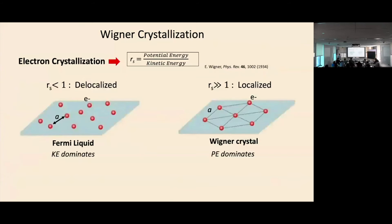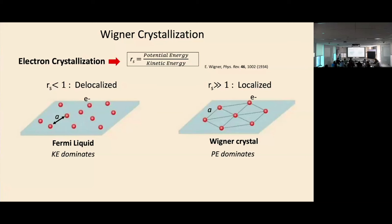The way to understand Wigner Crystal — I learned from Andy when I was a graduate student at Columbia — is that it's controlled by the parameter R_S, which defines the competition between the kinetic energy and potential energy of the electron. When the kinetic energy is high, meaning R_S is small, electrons want to lower their kinetic energy by being very delocalized. On the other hand, when the potential energy is very large, electrons want to minimize potential energy by staying apart from each other, and they form the Wigner Crystal phase.